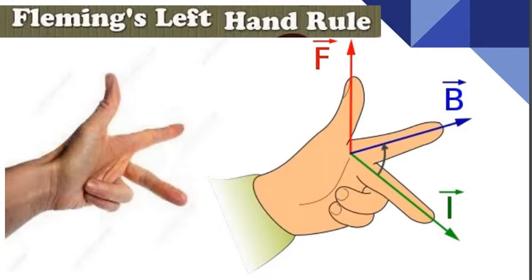We'll just recollect Fleming's left hand rule. Stretch your forefinger, center finger and thumb mutually perpendicular to each other, such that your forefinger points the direction of the magnetic field and your center finger points the direction of the current.